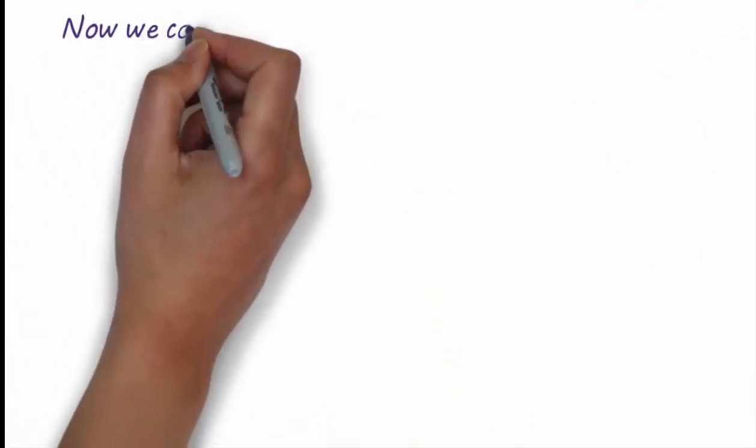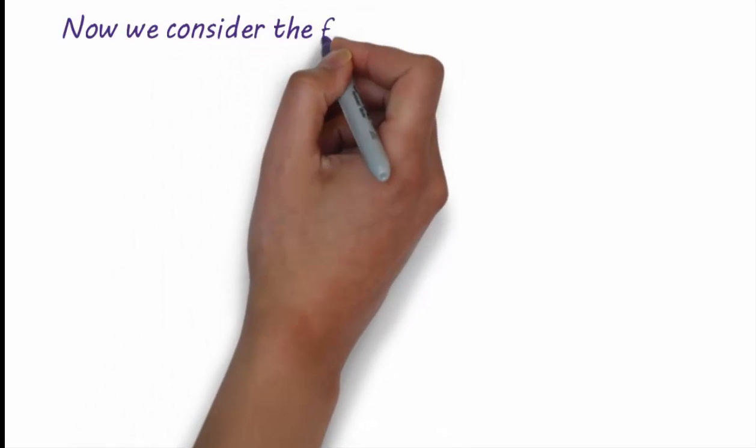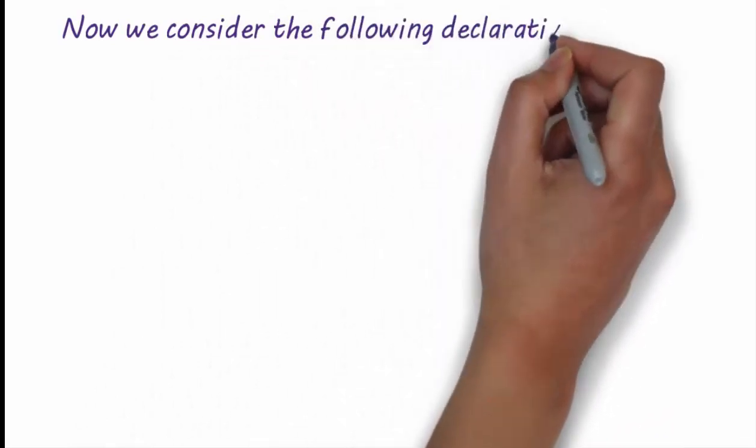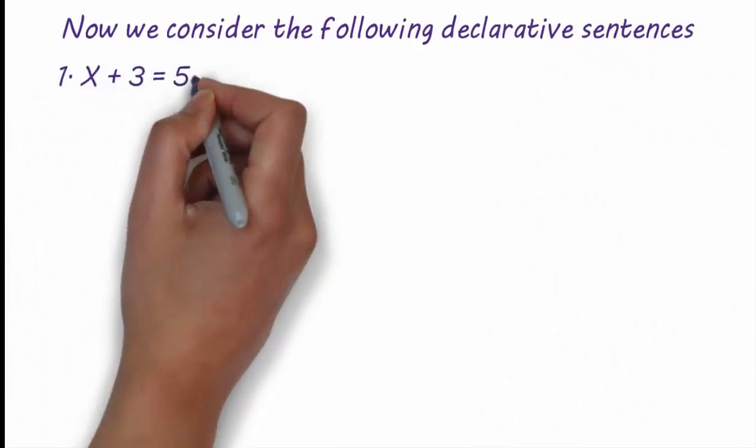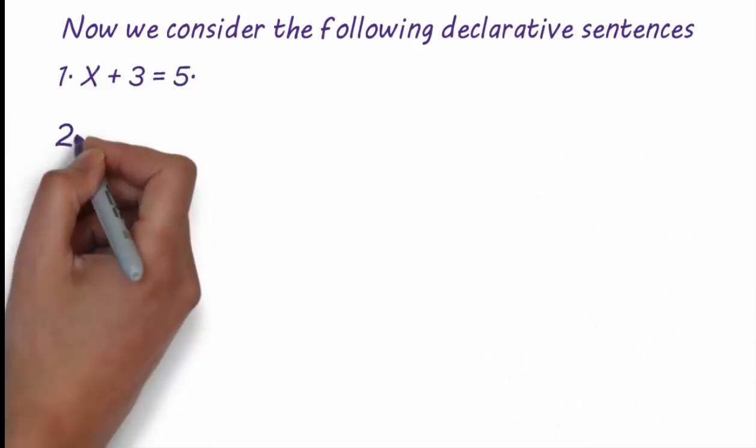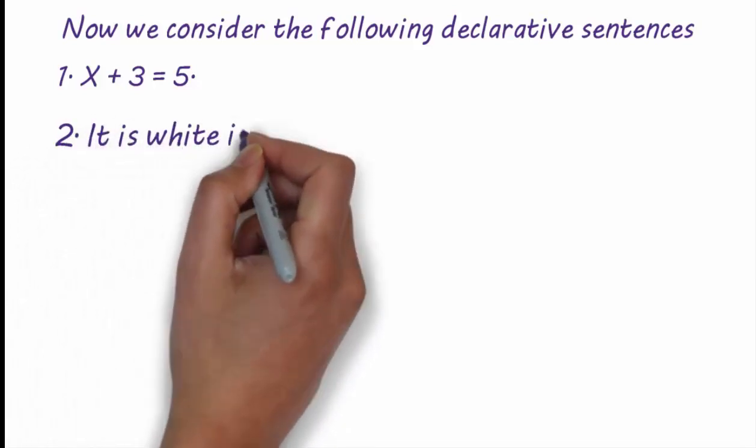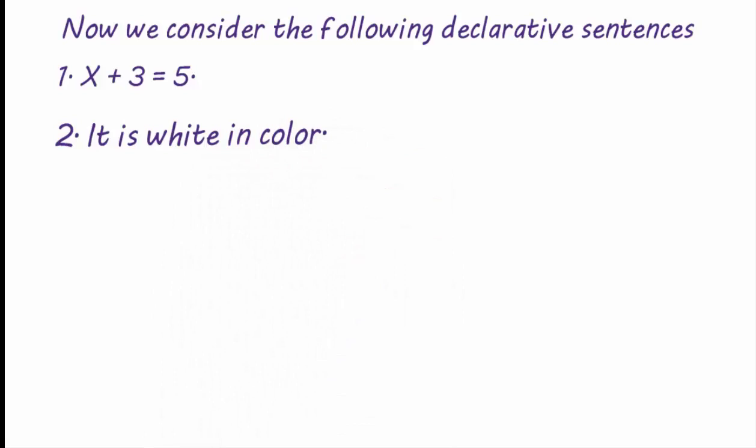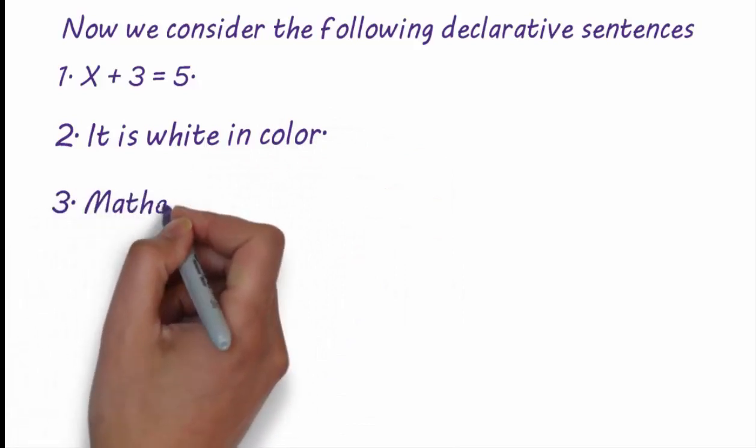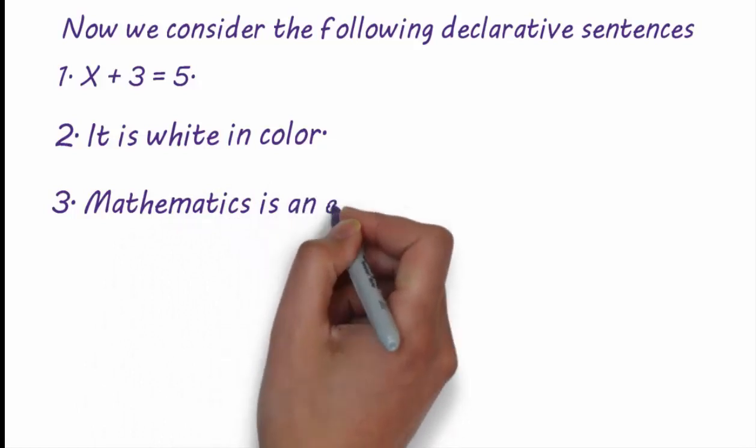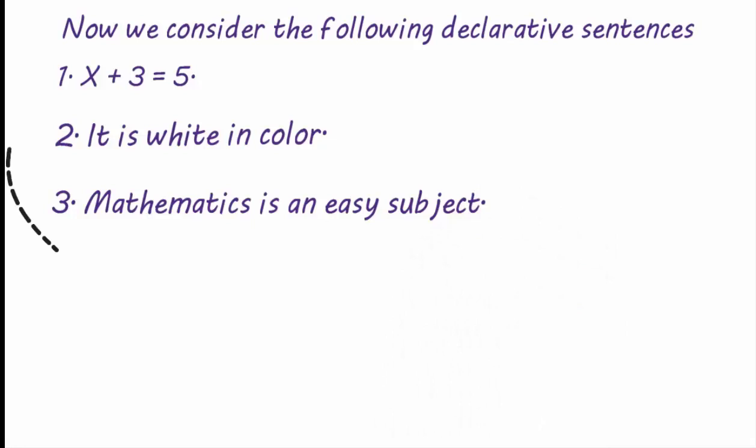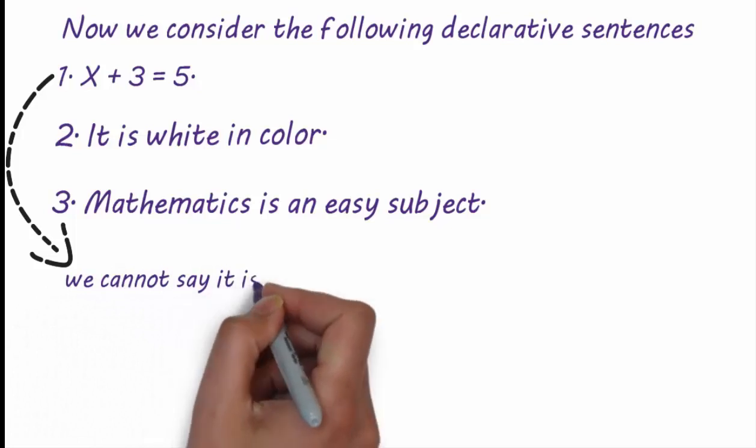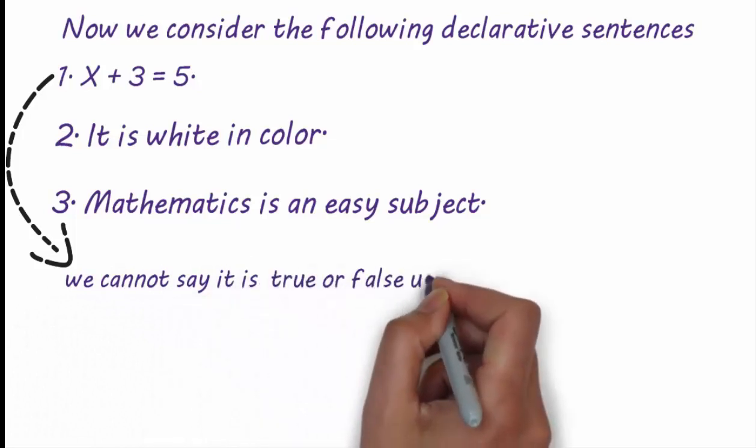Now we consider the following declarative sentences. Number one: x plus 3 is equal to 5. Number two: it is white in color. Number three: mathematics is an easy subject. In the first sentence, we cannot say it is true or false unless we know the value of x.